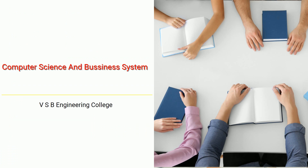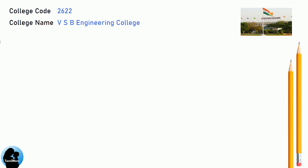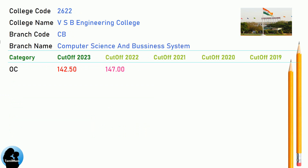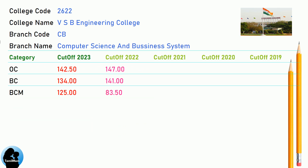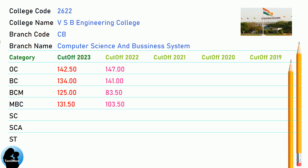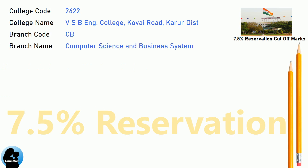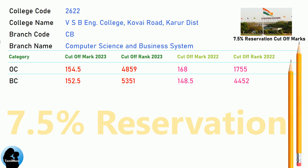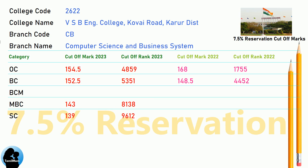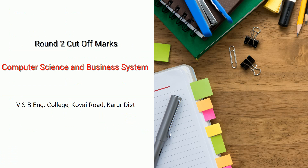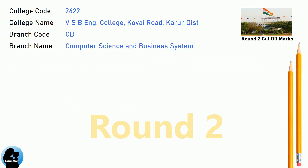DNA Cut-Off for VSB Engineering College in Computer Science and Business System. DNA 7.5 Reservation Cut-Off for VSB Engineering College in Computer Science and Business System. DNA Round 2 Cut-Off for VSB Engineering College in Computer Science and Business System.